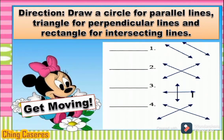All right, let us check whether your answer is correct. Number one is parallel — so the circle. Number two is intersecting. Number three is perpendicular. Number four is intersecting. Who got a perfect score?